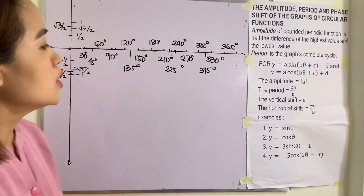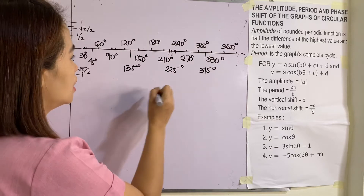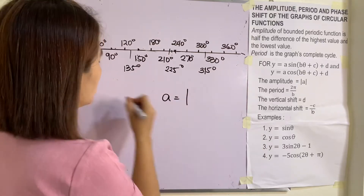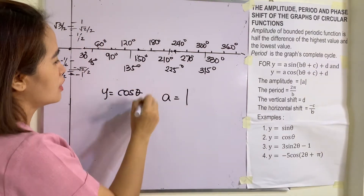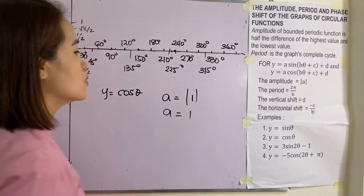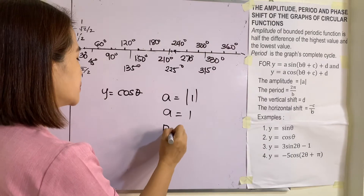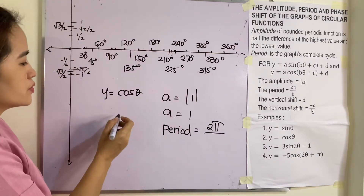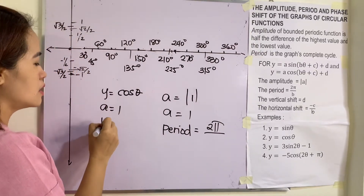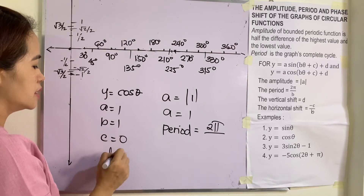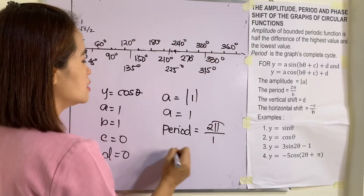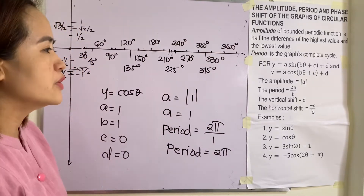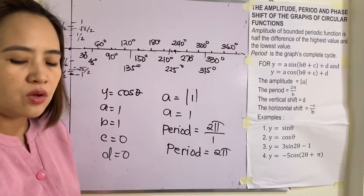Now graphing y = cos θ. The amplitude equals the absolute value of A = 1. Our parameters: A = 1, B = 1, C = 0, D = 0. The period is 2π/B = 2π/1 = 2π — one complete cycle. The vertical shift is 0 and the horizontal shift is also 0.